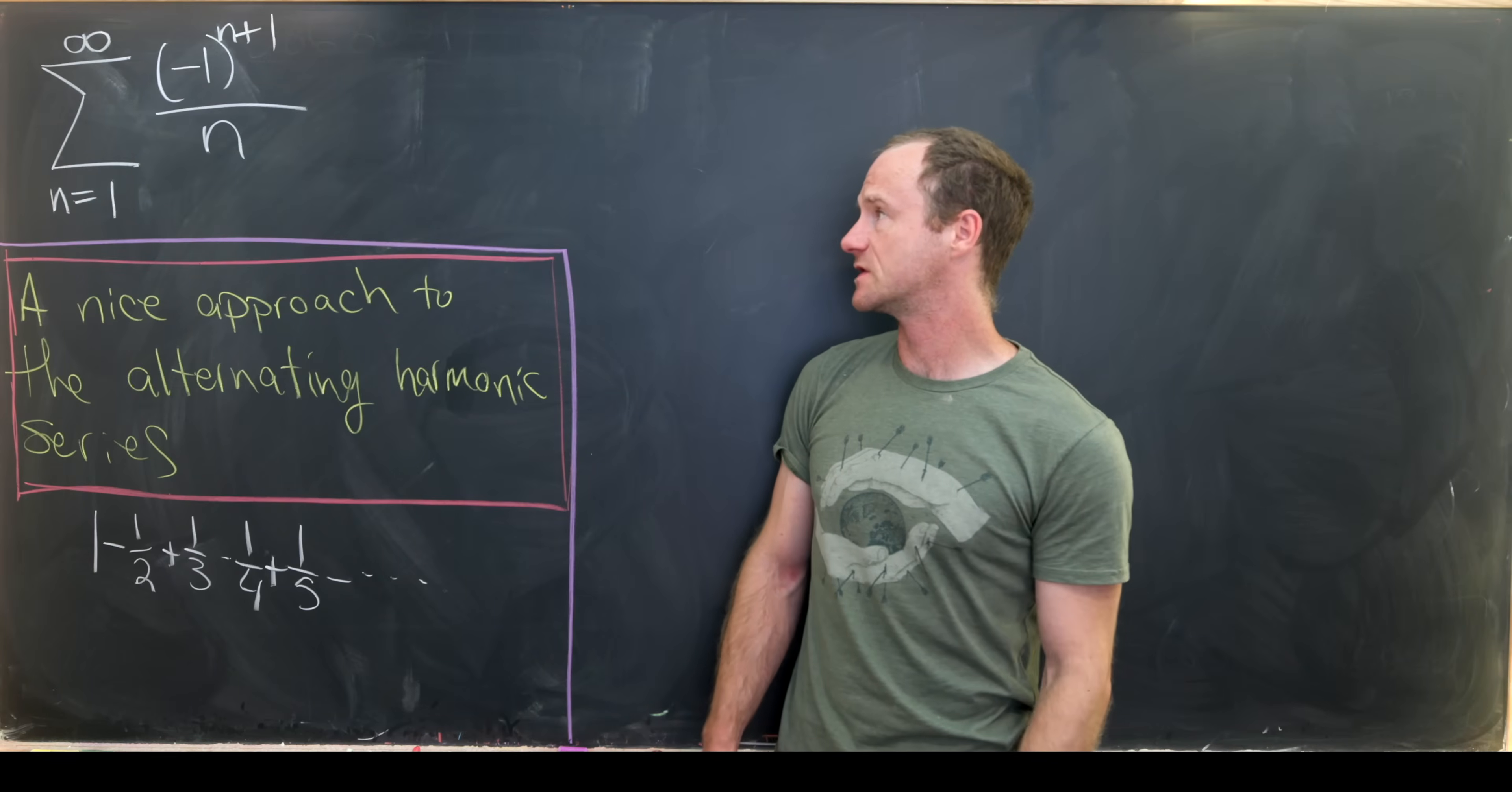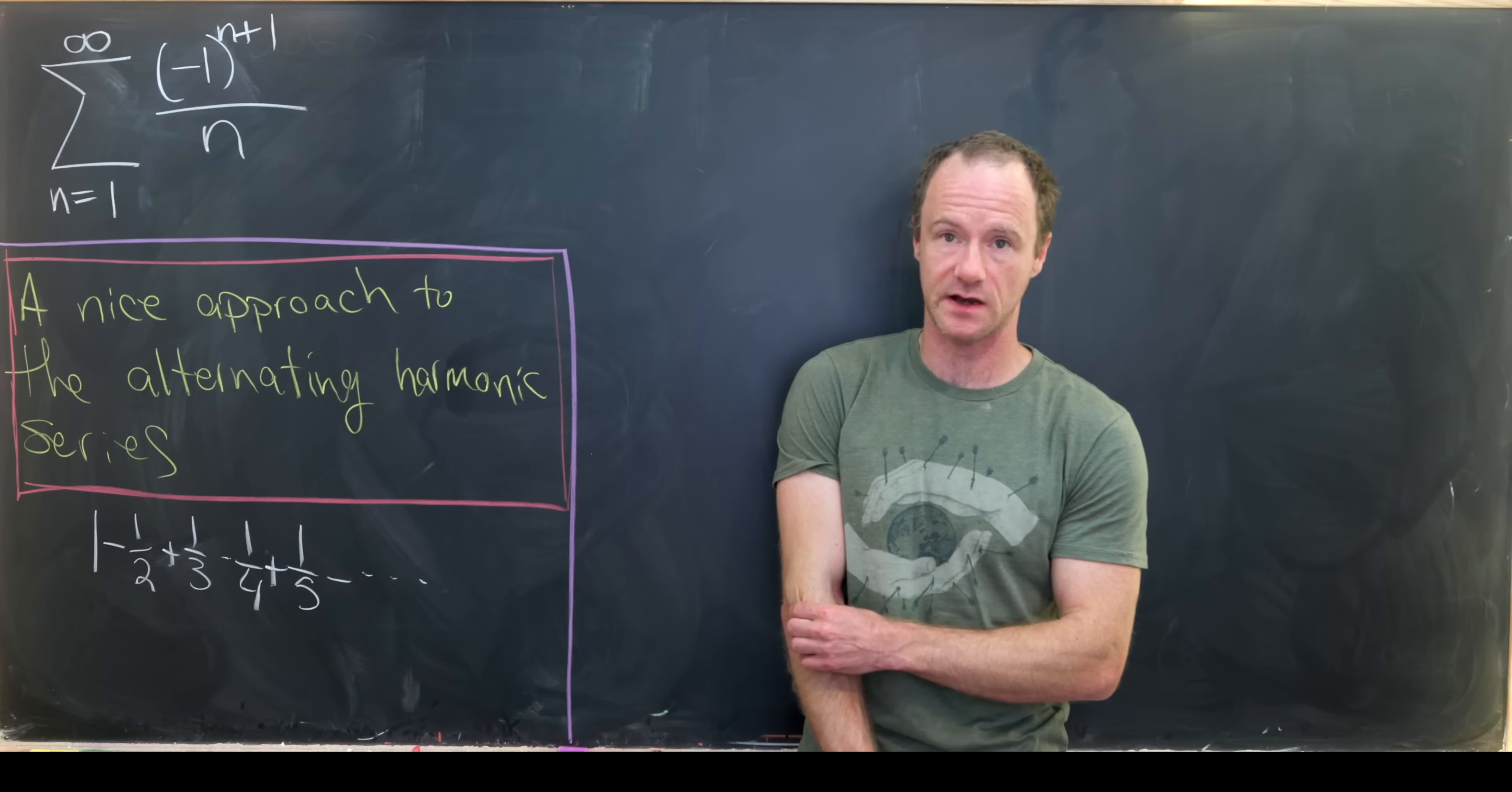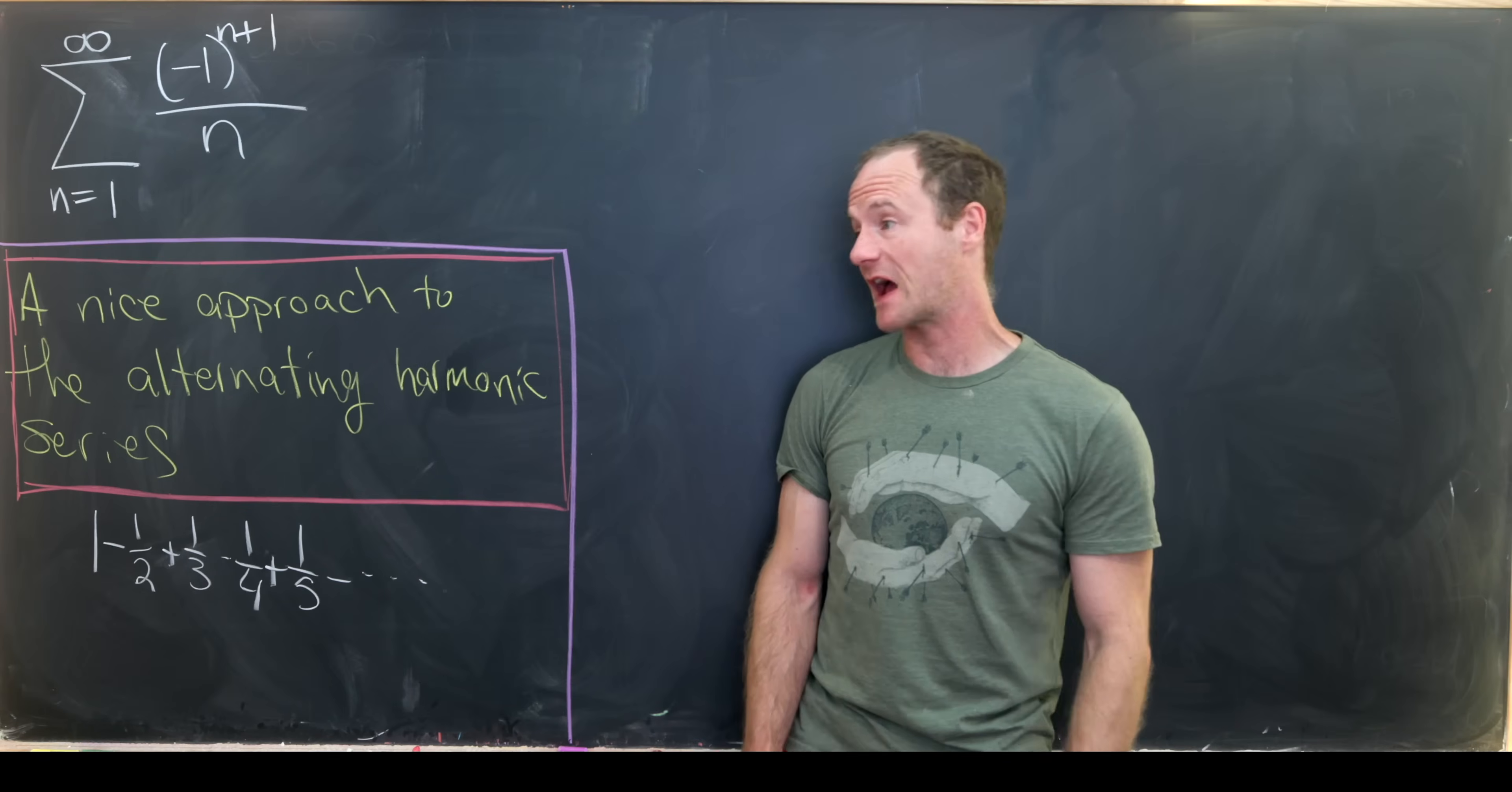So we can put that all together into summation notation as follows. We have the sum as n goes from 1 to infinity of (-1)^(n+1)/n. So it's well known that the non-alternating harmonic series diverges, but this thing in fact converges.